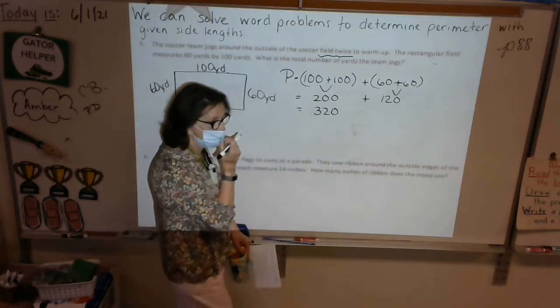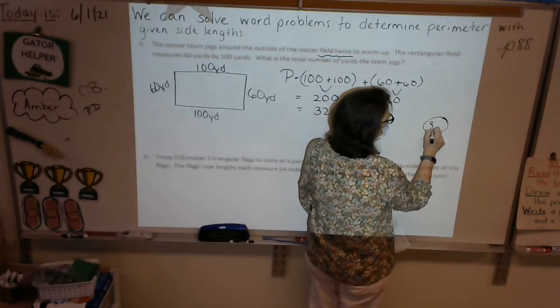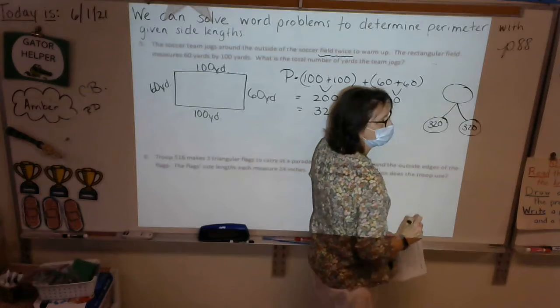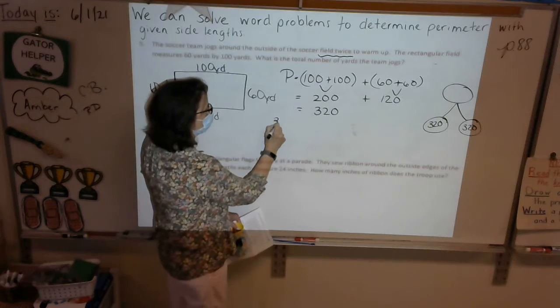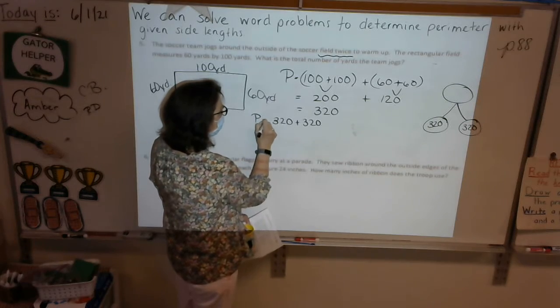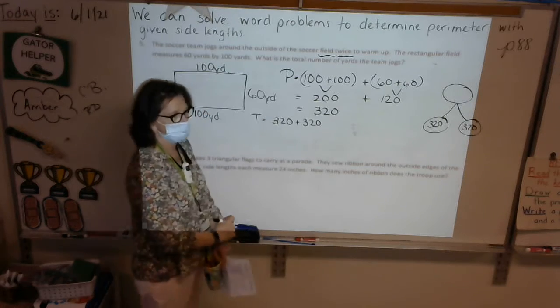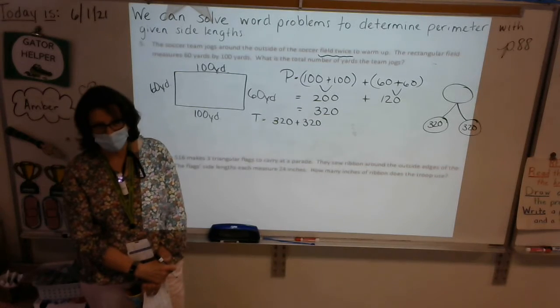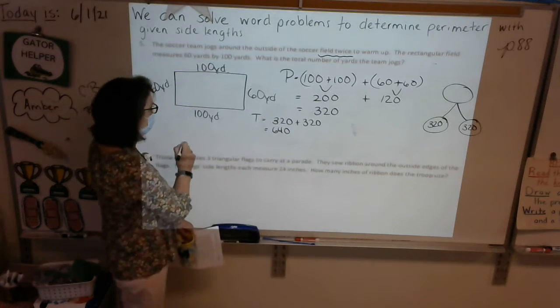But if they're going to do it twice, we could even draw a number bond. We could put 320 for the first time they go around, 320 for the second time they go around. What do we got to do? We got to add 320 plus 320, right? And all of this actually is pretty easy math to do. It's easier than most math. Okay, and I'm going to put, instead of P, I'm going to put total equals. The totals for both times is 320 plus 320. Anybody do that and get it mentally? Eli, what'd you get? Very good, 640. Now all we need is our TS. What is the total number of yards the team jogs? The team jogs 640 yards in total.